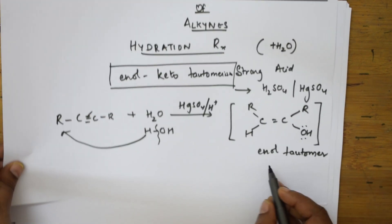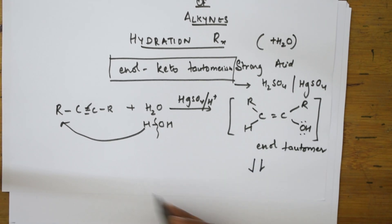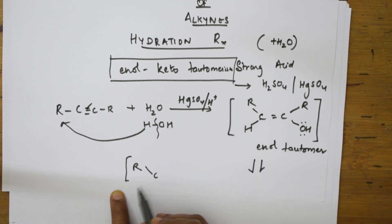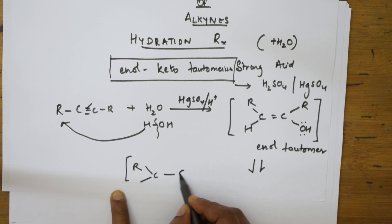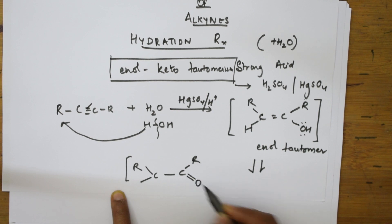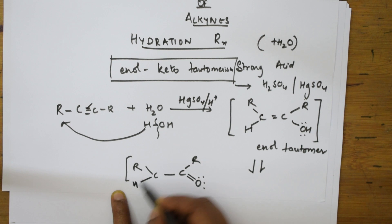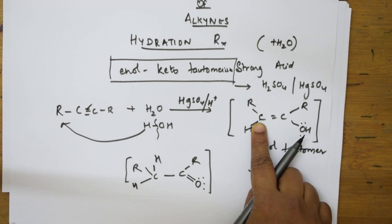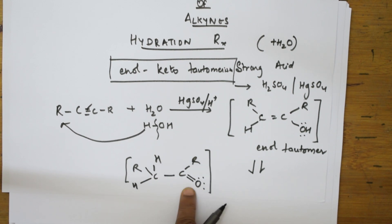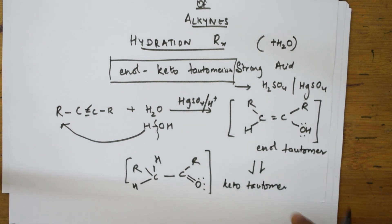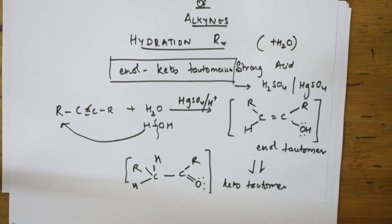The enol tautomer is in equilibrium with another compound. In that compound, there is a C=O (ketonic group) instead of C=C–OH. A hydrogen shifts from one carbon to the adjacent carbon, converting the enol form to the keto form. The compound with the ketonic group is called the keto tautomer. This interchange or equilibrium between the enolic group and the keto group is called tautomerism — keto-enol tautomerism.